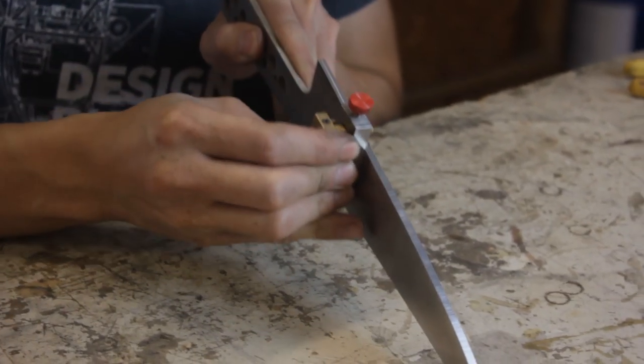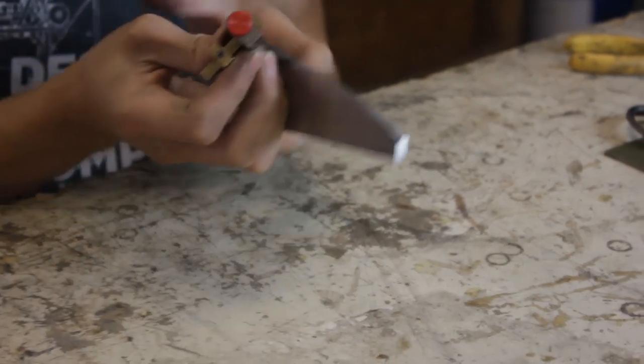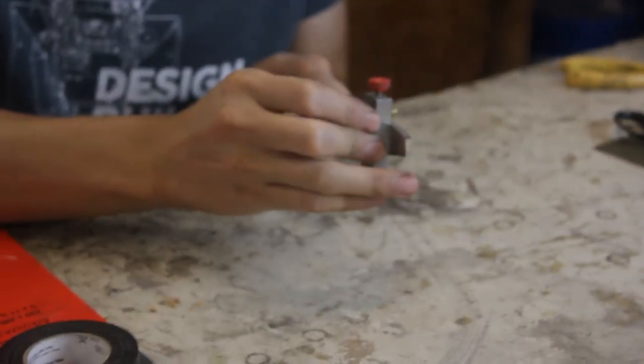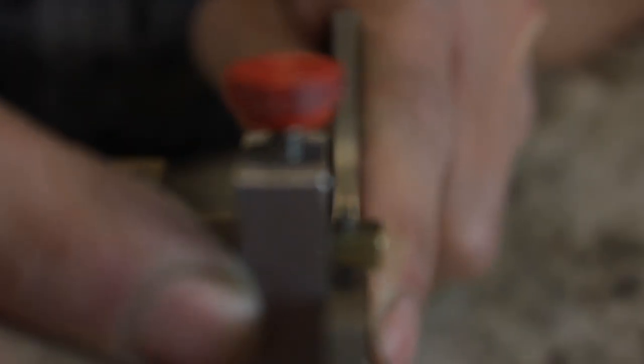First thing I do on any knife is establish my center lines. This is the foundation of the entire build and if they're done right from the beginning, every other step forward is that much easier. Even on blades that are slightly warped, you can scribe a center line straight down the middle and adjust accordingly. If I don't do this, I'll be fighting the build throughout the entire process.